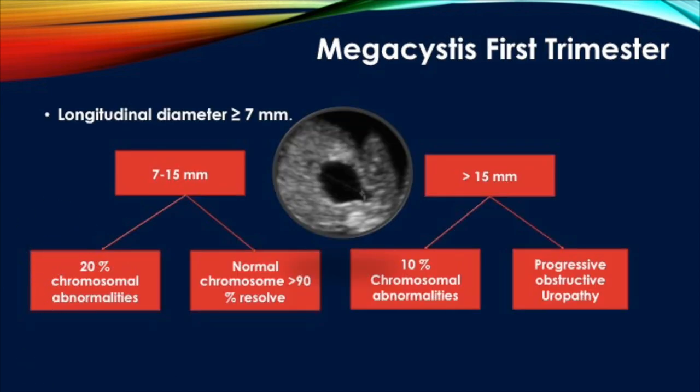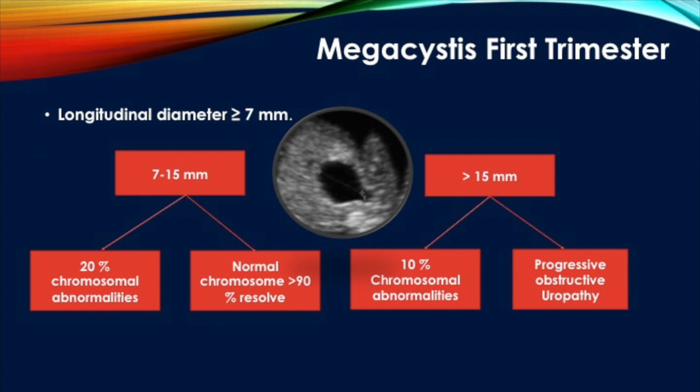The bladder can be enlarged or not visualized at all. Regarding dilated bladder: when the longitudinal diameter is ≥7 mm in the first trimester, it is called megacystis. No such cutoff exists in the second or third trimester. When the bladder diameter is between 7–15 mm, it is mild to moderate megacystis, and 20% of these cases are associated with chromosomal abnormalities.